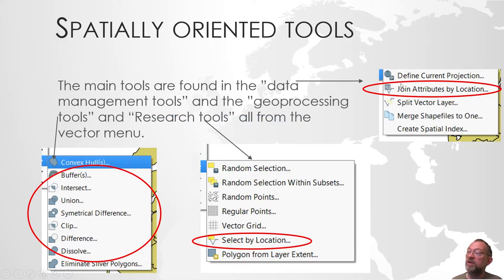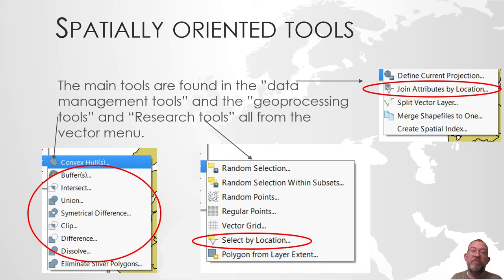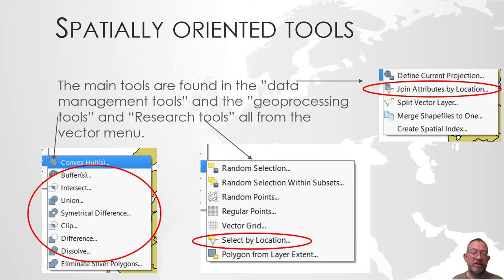From the data management tool, there is especially one called Join Attributes by Location, which is often used. If you want to find out which municipalities or which postal codes some points belong to, we'll be using a join by location. It's just like the join by attribute, but here we combine attributes from two layers based on shared geometry — so that points are inside a polygon, or on a line, and so on. Join attributes by location is commonly used if you have point data you want coded in relation to some polygons, such as which type of soil water wells are on.